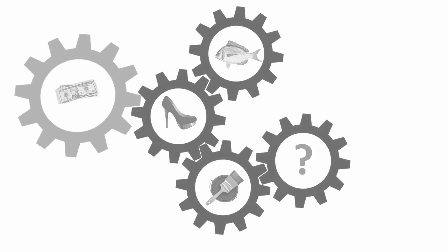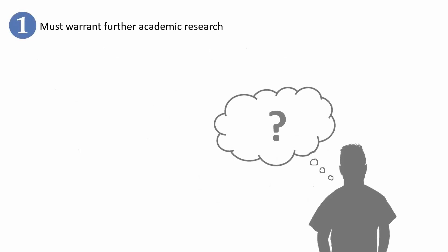Simply put, a topic is an area you wish to investigate. When thinking of a topic, there are three simple rules. Number one: the topic of the study must represent an academic and/or practical problem area that warrants further academic research. Investigating why some women like to wear high heels and others don't might be interesting, but if you cannot justify a case for why that topic is important, then perhaps you shouldn't go into it.